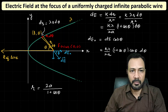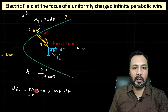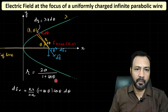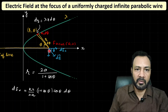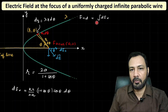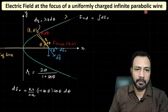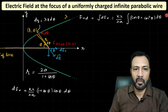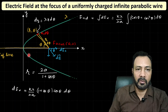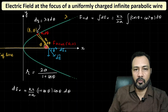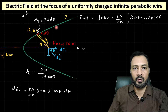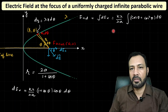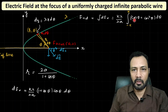The net electric field is E_net = ∫dEx = [kλ/(2a)] ∫(cosθ + cos²θ) dθ. The limits on θ run from −π to +π to cover the entire parabolic wire. Since the integrand is an even function, I can write E_net = [kλ/(2a)]·2·∫₀^π (cosθ + cos²θ) dθ.